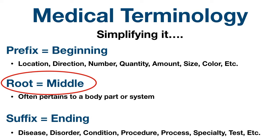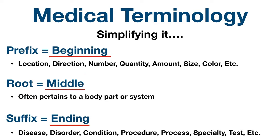You might remember from the previous video that most medical words have a beginning, middle, and end. Starting with the prefix, it typically is the descriptive part of the medical term, and it forms the beginning of the word. The prefix describes characteristics like a location, direction, number, quantity, amount, size, or color.